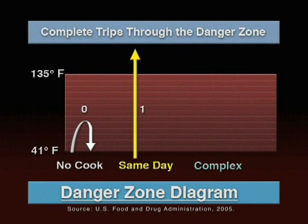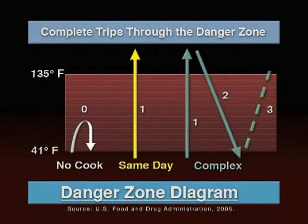Complex, for food items prepared hot then cooled and served cold or reheated. Foods in the complex category move through the temperature danger zone at least twice.